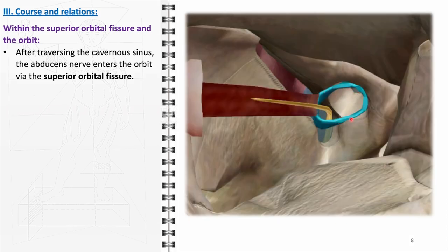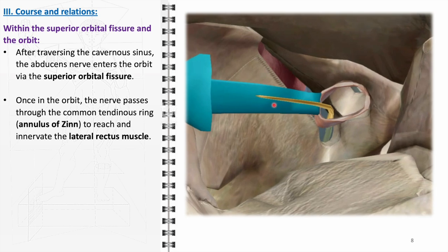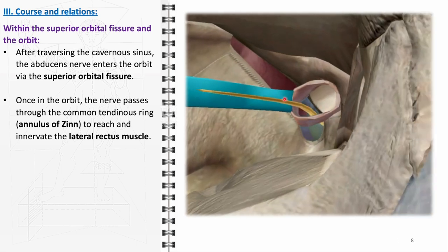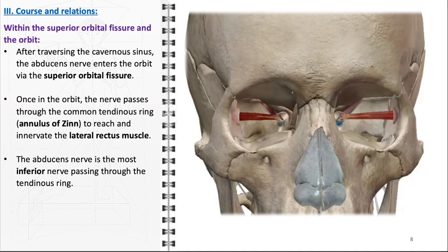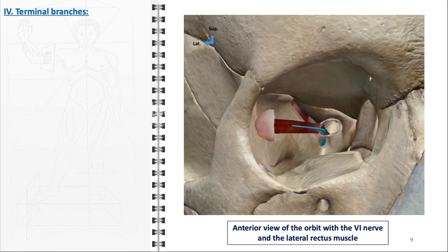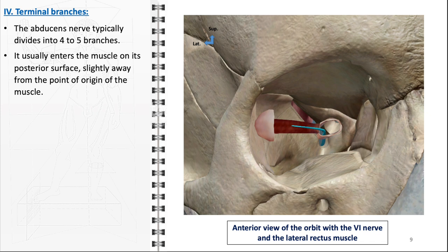Upon its entry into the orbit, the abducens nerve navigates through the common tendinous ring, also known as the annulus of Zinn. The nerve's passage through this ring is a pivotal moment in its course, directing it towards its final destination, the lateral rectus muscle. Uniquely, the abducens nerve is characterized as the most inferior nerve traversing the tendinous ring. The abducens nerve typically divides into four to five branches as it approaches its target, ensuring widespread and effective distribution of motor fibers for uniform and coordinated contraction of the muscle. These branches enter the lateral rectus muscle on its posterior surface, slightly away from the muscle's origin.